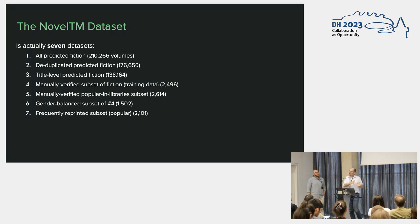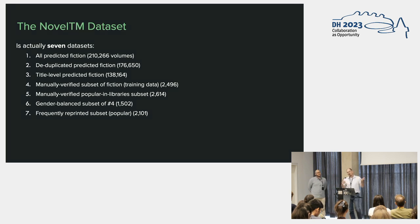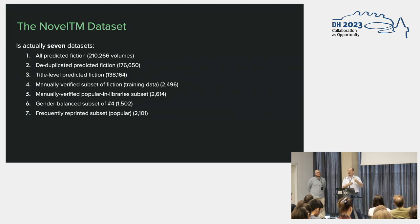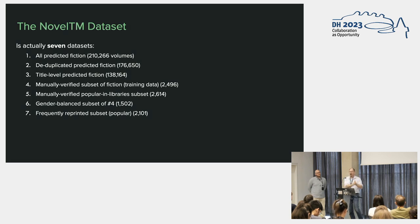There are also different desires for accuracy and reliability. Some people really want to know that every volume they're using in their analysis truly is fiction — they need 100% manually corrected precision. Some people don't need that, or believe their problem doesn't require it. That's why the original dataset consisted of many subsets, partly as a rhetorical device to dramatize that we weren't offering a single dataset as representative — you can slice this in different ways. We have a subset that's manually corrected, and a subset that's gender balanced.